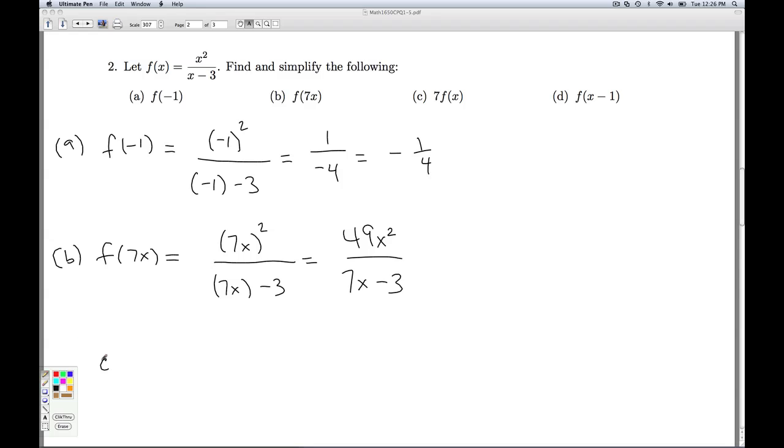Now, let's contrast b with c. c asks us to find 7f of x. So here I'm multiplying the input x by 7. Here I'm multiplying the output f of x by 7. So what I do is I replace f of x with this expression, x squared over x minus 3. So it's 7 times x squared over x minus 3. I'm thinking of this 7 as a 7 over 1. I multiply numerator and denominator. 7x squared over x minus 3. And we can see that these two things are entirely different. And that in general is going to be true about functions, is that if you modify something on the inside, the same modification on the outside is going to do something different. So we'll see more about that theme in section 1.8.